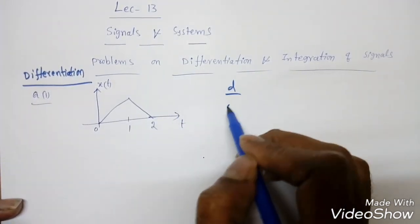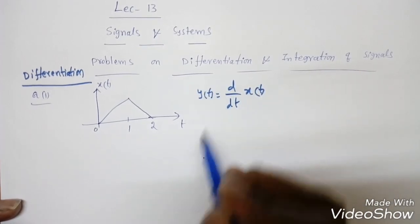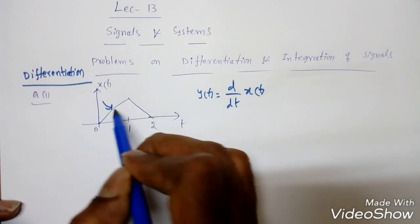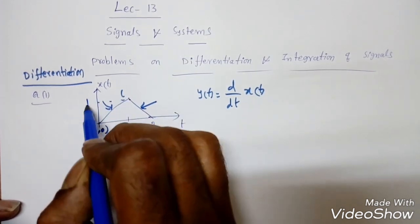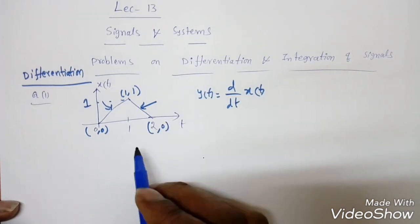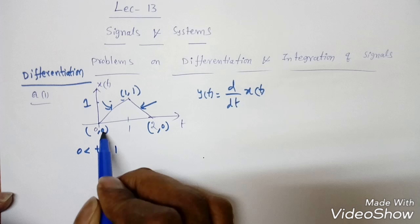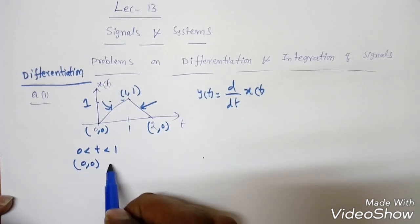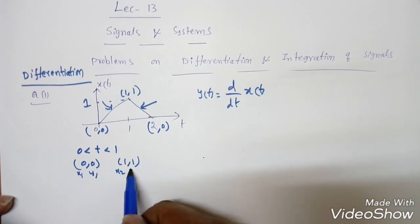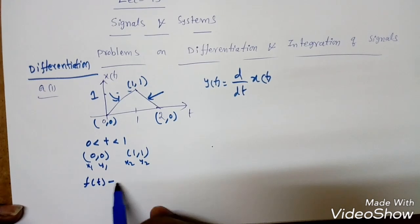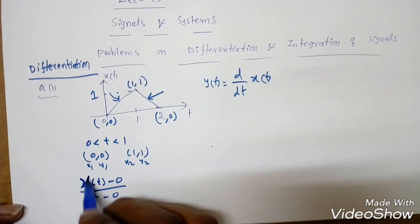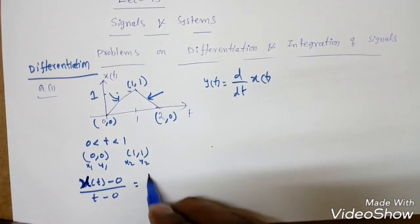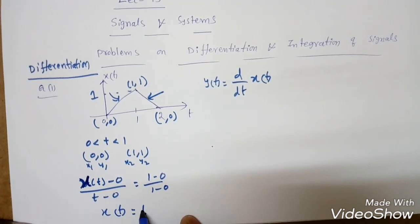For differentiation, we need to find d/dt of x(t), which I'm assuming as y(t). We cannot directly differentiate — first we need to find the function. The points are: (1,1) and (2,0). Between 0 < t < 1, the points are (0,0) and (1,1). Using the line equation, x(t) = t for 0 < t < 1.